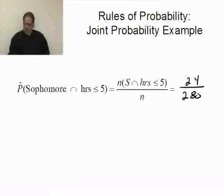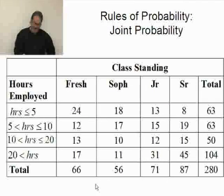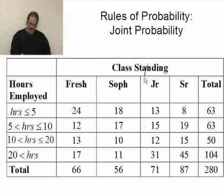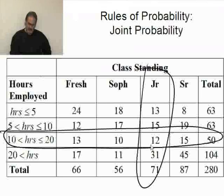And actually, that's really all there is to it. It's really kind of nice and easy when you're working with a chart. If I asked for the probability of juniors and work 10 to 20 hours, well, here's my juniors, here is my 10 to 20 hours. Where do they intersect? Right there. That's the AND. So that probability would be 12 over 280.